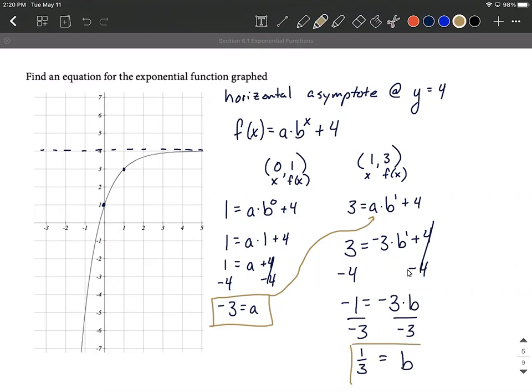All right, so now we have a value for a and a value for b. So let's put these back together, back into our original one we wrote with the transformation, moving everything up before. So our function is going to be f of x equals negative 3 times 1 third raised to the x power, with a plus 4 added to the end of the entire thing. That's going to be the function that produces this graph.